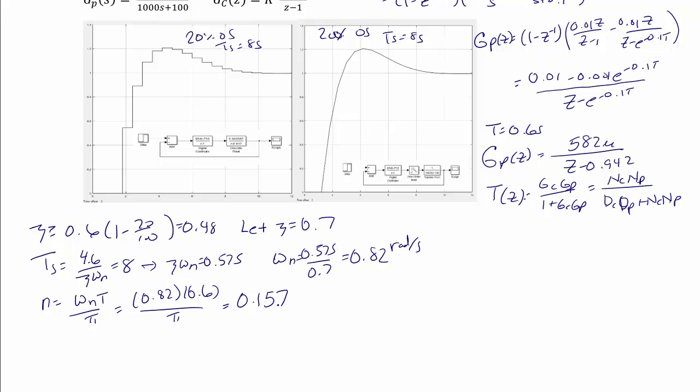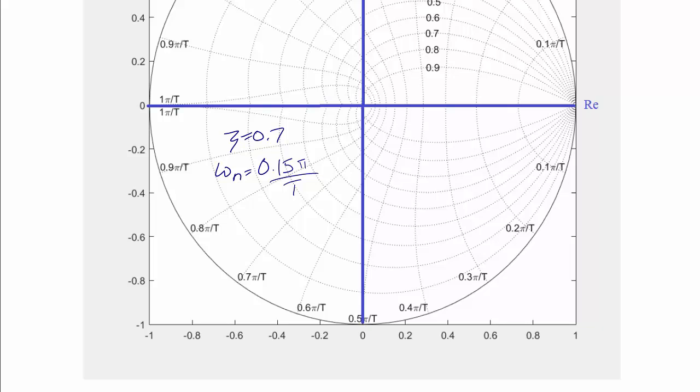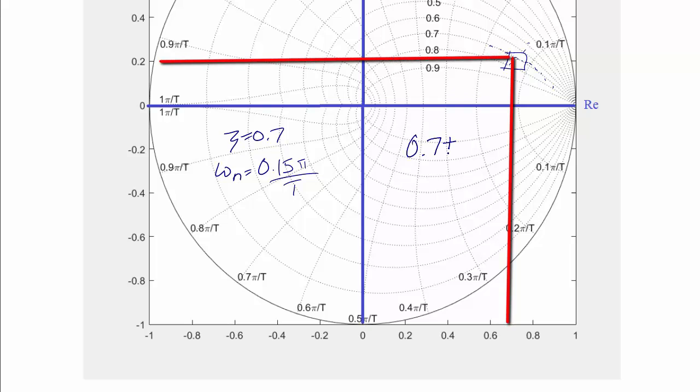So now we're going to go to the chart, and we're going to look for omega n equals 0.82, settling time of 8 seconds, and zeta equal to 0.7. So here we have our constant zeta, constant omega n design chart, and we're going to find zeta equal to 0.7, which is this curve here. And we're going to find 0.15 pi over t, which is approximately here. So we know that we want our closed loop poles to be around here. So I am going to select 0.7 plus or minus j 0.2 for our closed loop.